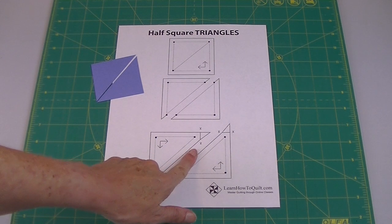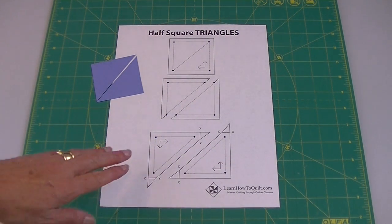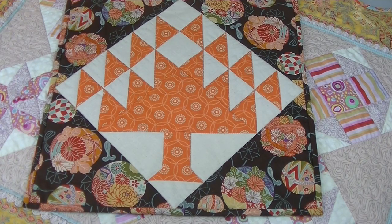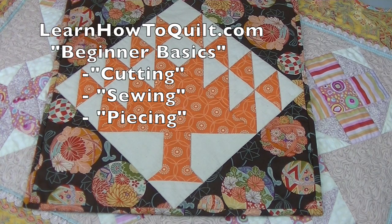So we've got a quarter of an inch plus three-eighths plus a quarter of an inch, and when you add that all together, you get seven-eighths of an inch. You can find more information about cutting and sewing half square triangles at LearnHowToQuilt.com under Beginner Basics, Cutting and Sewing.